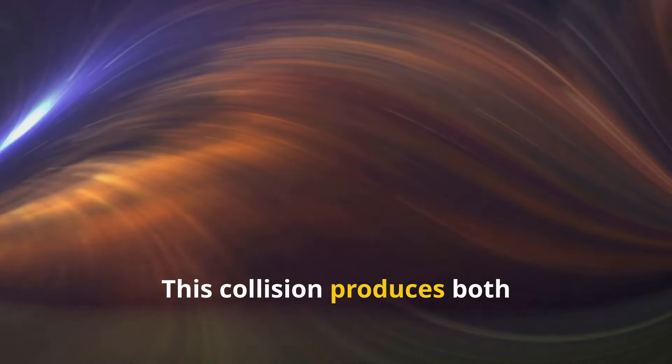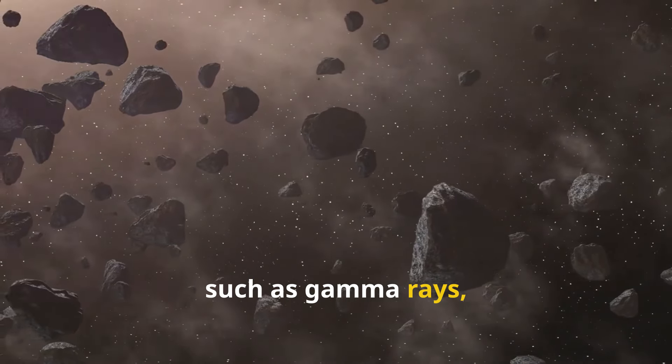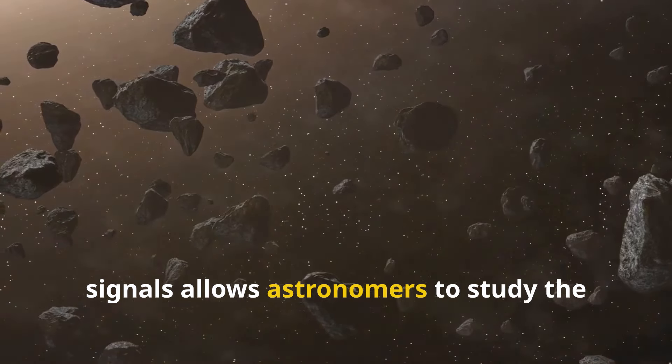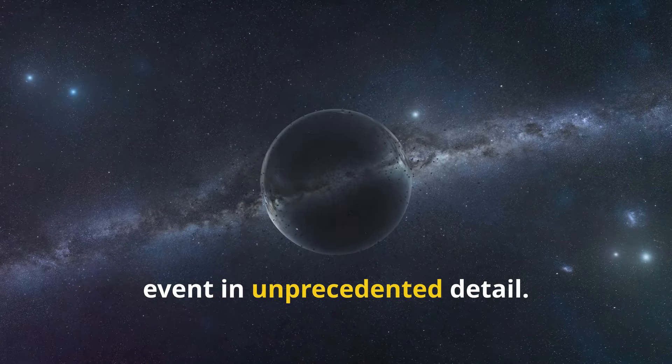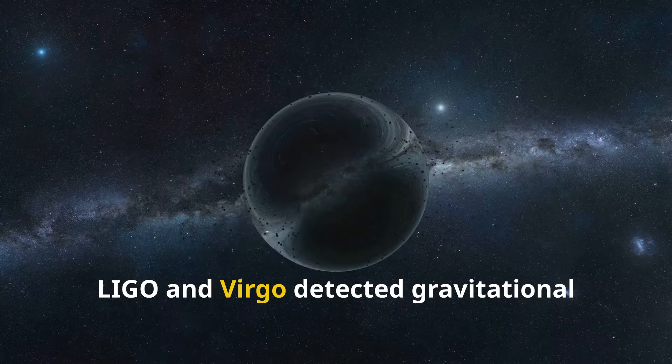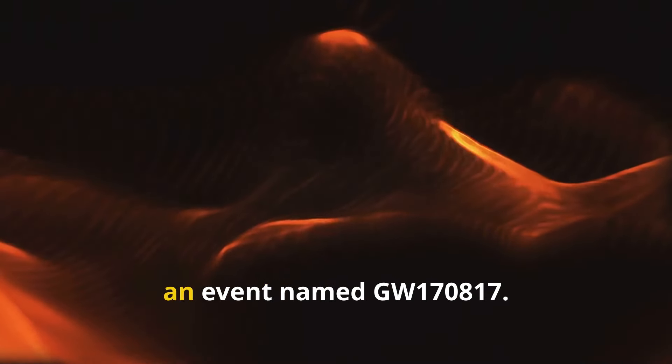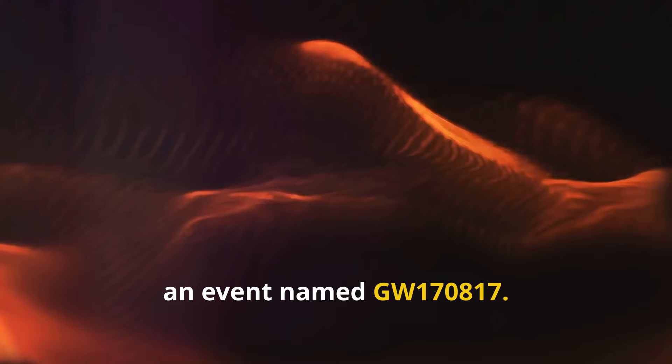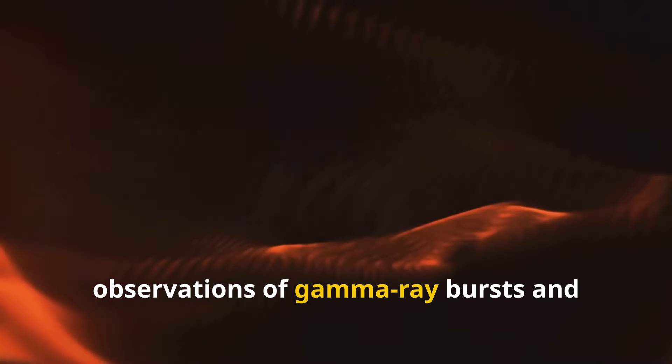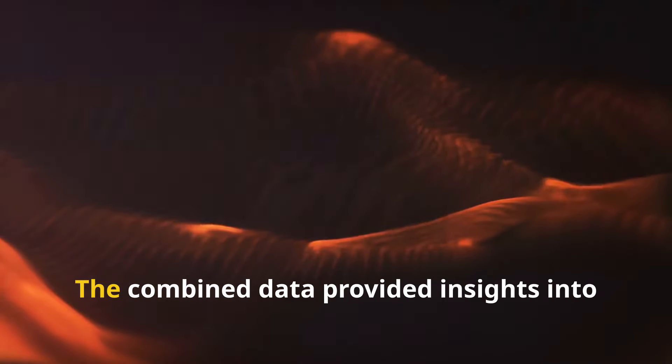This collision produces both gravitational waves and electromagnetic radiation, such as gamma rays, x-rays, and visible light. The simultaneous detection of these signals allows astronomers to study the event in unprecedented detail. In August 2017, LIGO and Virgo detected gravitational waves from the merger of two neutron stars, an event named GW170817. This detection was accompanied by observations of gamma-ray bursts and optical counterparts by various telescopes around the world.